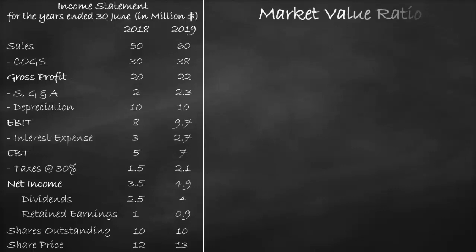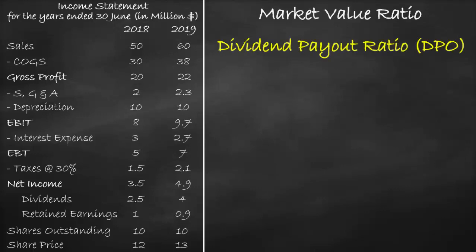An example of a market value ratio is the dividend payout ratio. The dividend payout ratio formula is dividends divided by net income. We get the net income and dividends from the income statement.